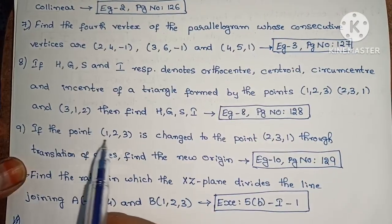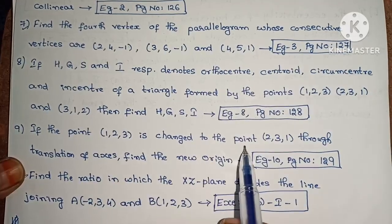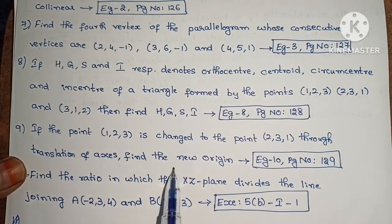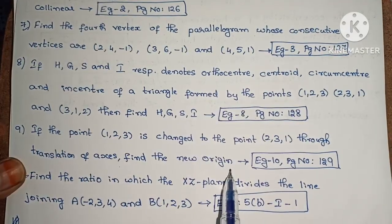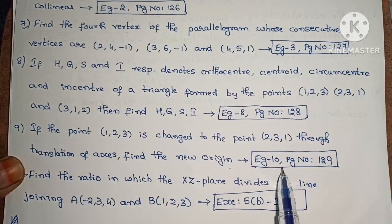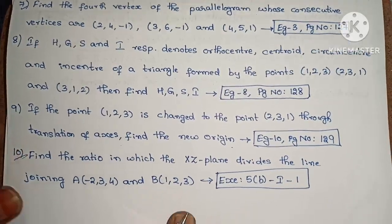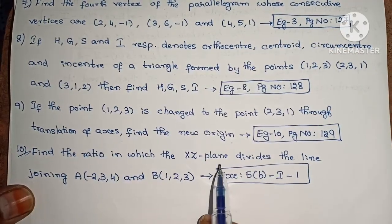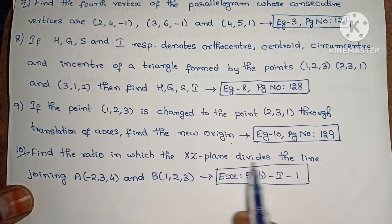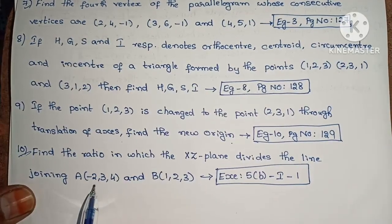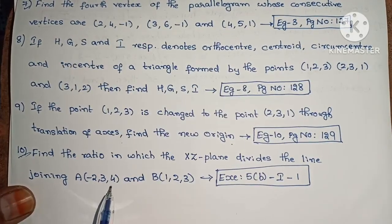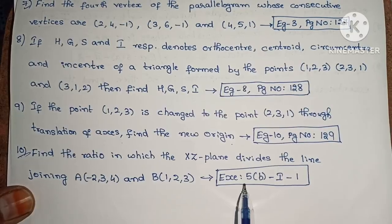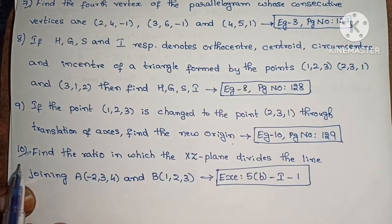Next, if the point (1,2,3) is changed to the point (2,3,1) through translation of axes, find the new origin. Example 10, page number 129. Next, find the ratio in which the XY plane divides the line joining A(2,3,4) and B(1,2,3) — Exercise 5B, first one.